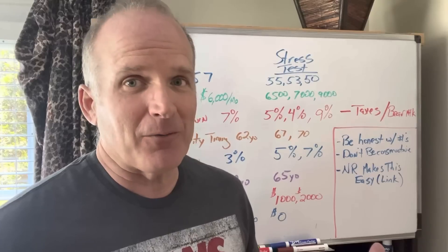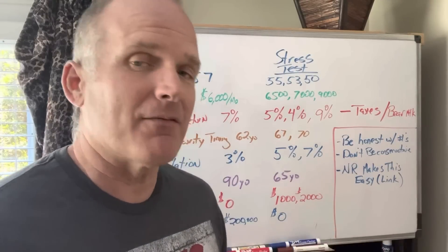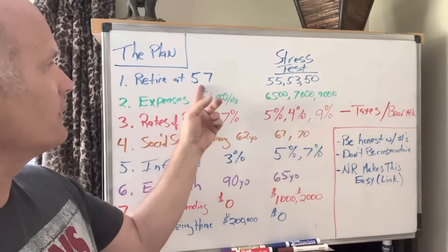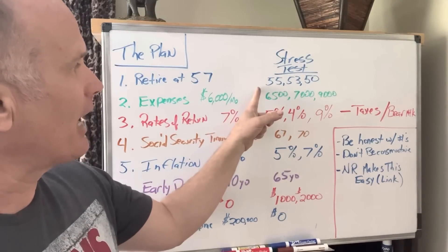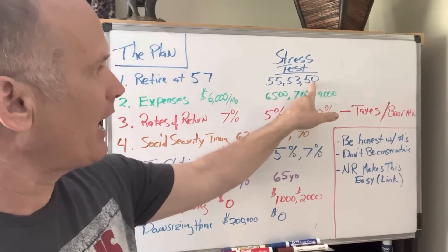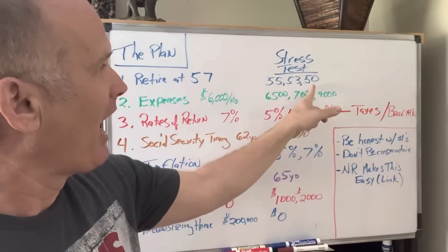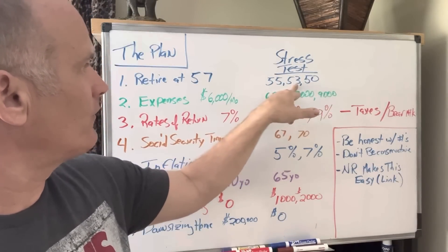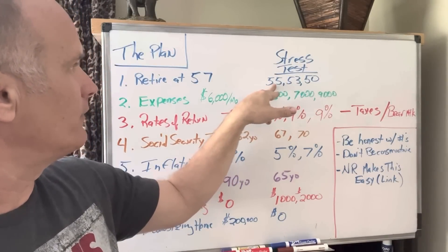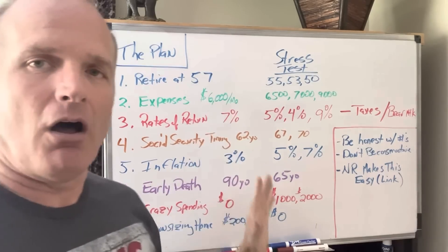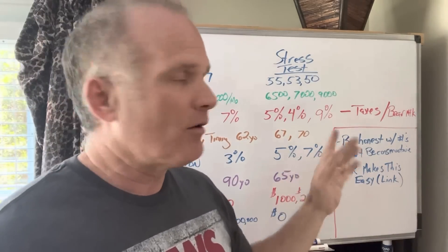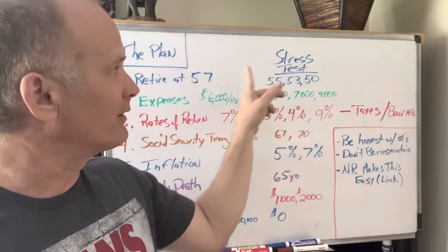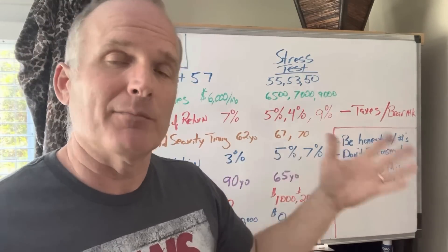I don't think anybody wants to fail their retirement plan in real life, so let's find the weak points. Retire at 57 — let's stress test that. What if you put in 50? What if you put in 53? What if you put in 55? Does it still solve? Because I think failure of your plan is you retired at 57 when you could have retired at 53. To me, that's failing.